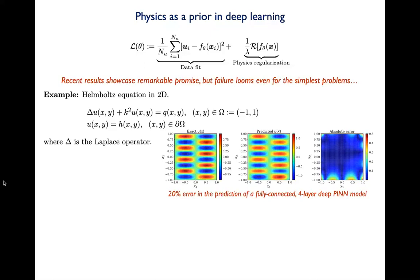Here's a toy example: the Helmholtz equation defined in a two-dimensional domain, a simple elliptic linear equation. If you represent the solution with a physics-informed neural network and train using the framework I just presented, it won't be easy to obtain accurate results. A fully connected network with four hidden layers gets about 20% relative error in the L2 norm, with a lot of error coming from the boundaries. The neural net has trouble fitting the boundary conditions for this problem. The question is: why does that happen?